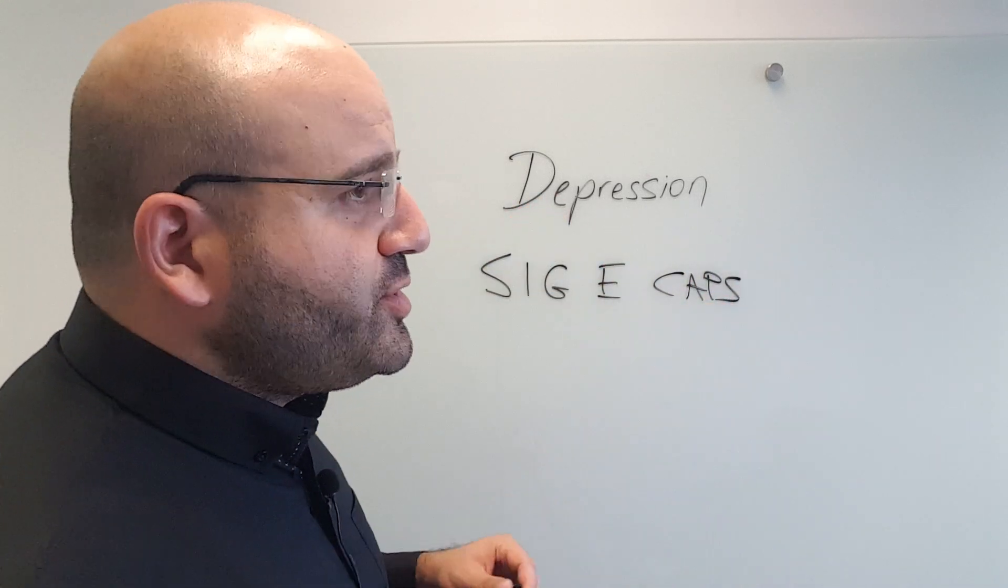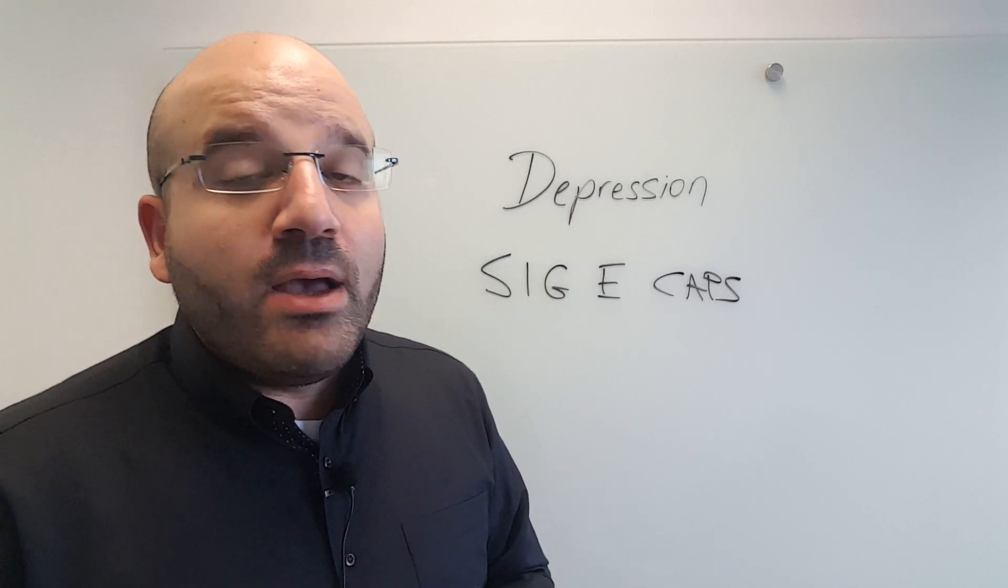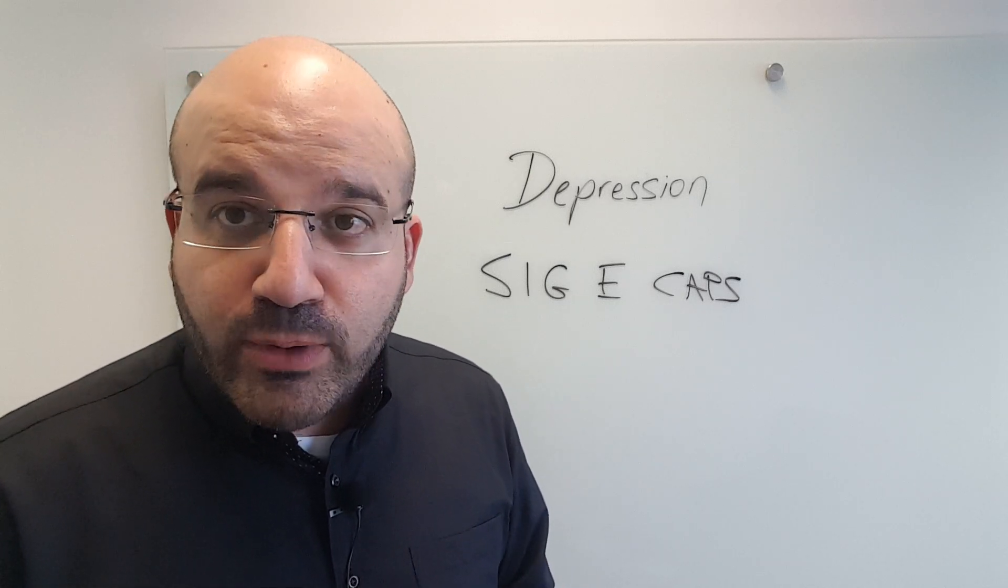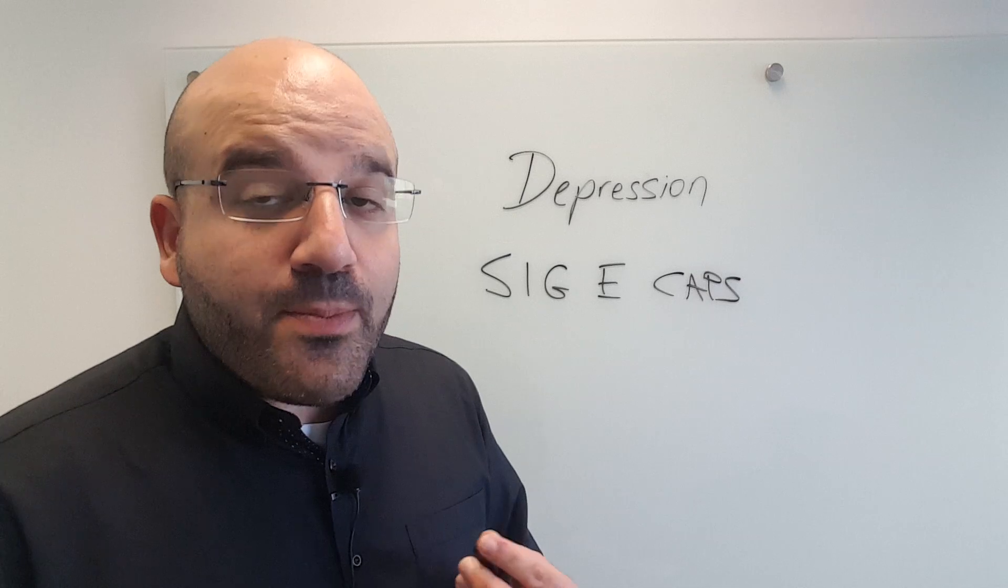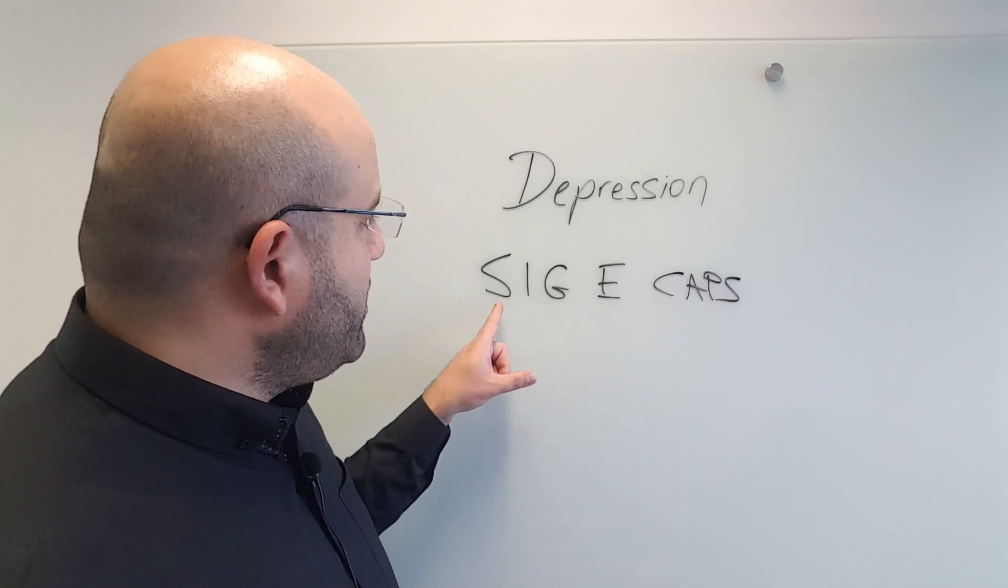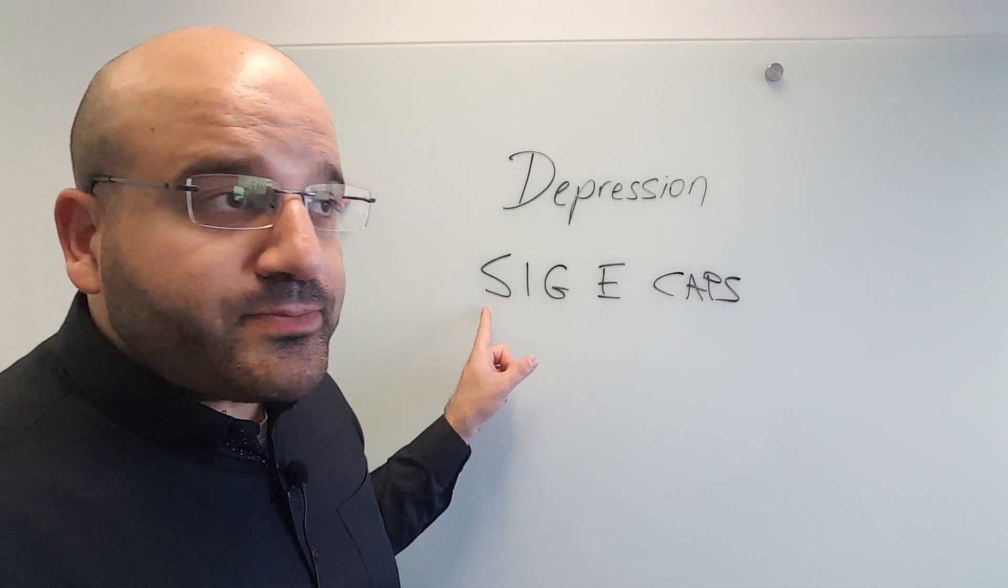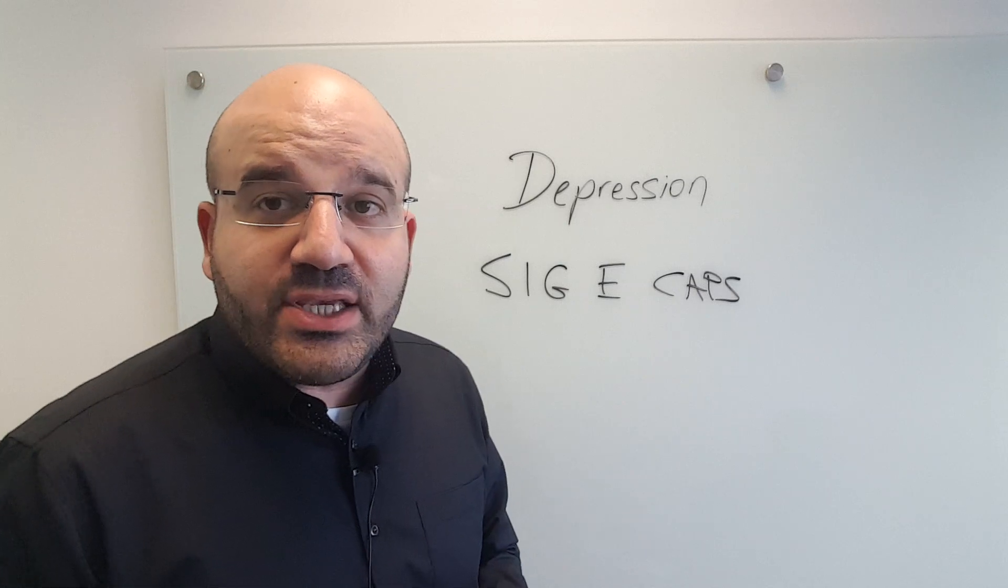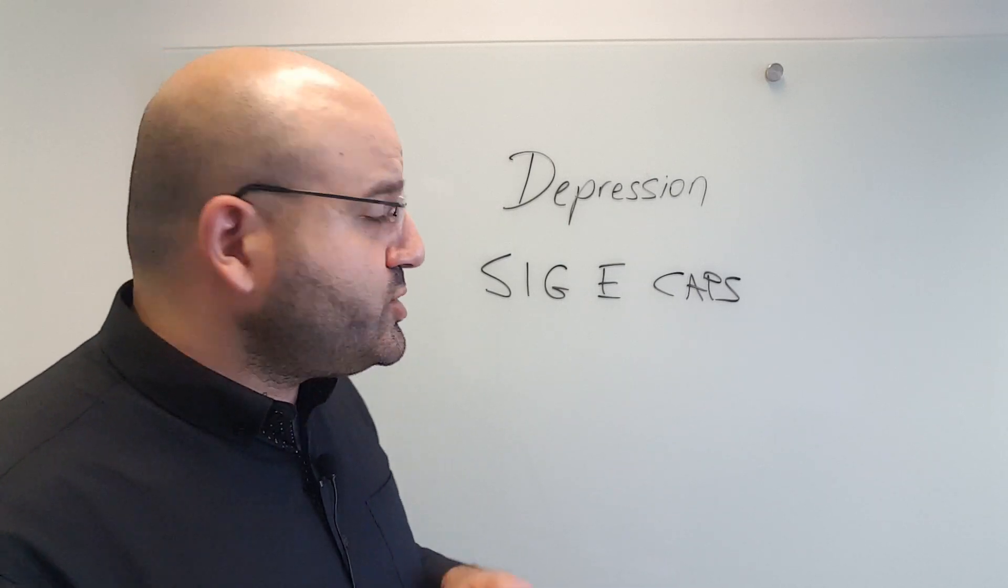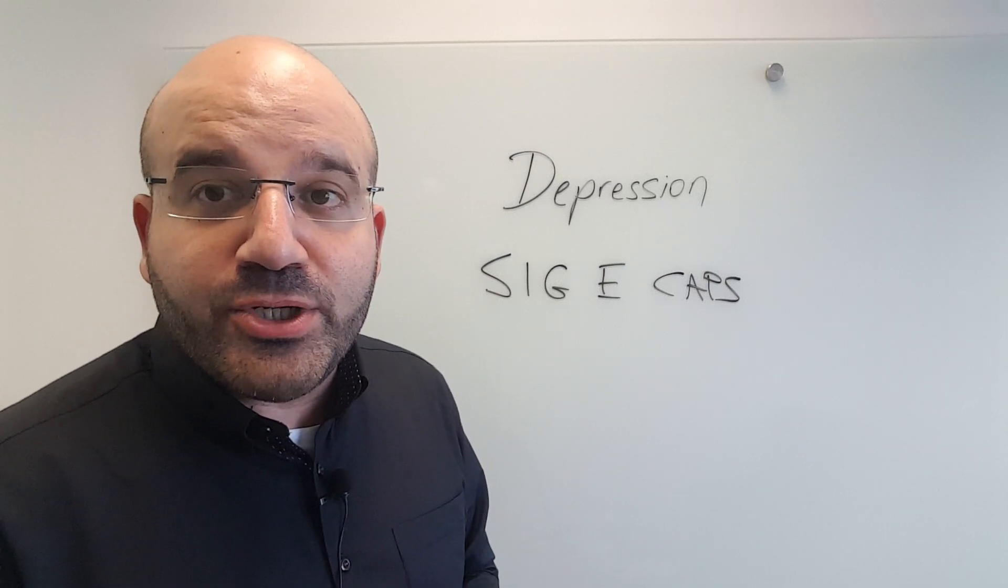With depression, the core feature is some ongoing mood disturbance, lowered mood, feeling blue. There's a depressed mood in most cases. Associated with that are symptoms of S, sleep disturbance. Typically in depression we see reduced sleep, but we can also get increased need for sleep, hypersomnia, especially in atypical depression.